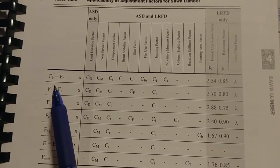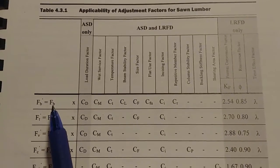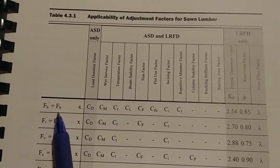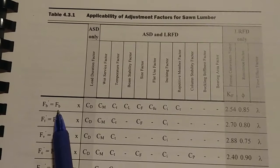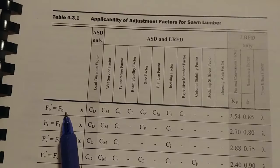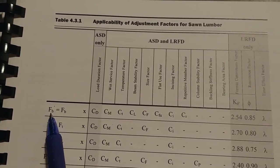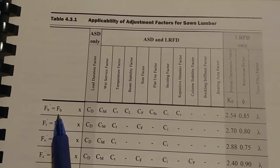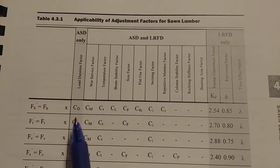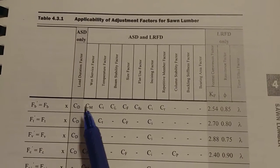So for us, right now we're looking at bending. So that's FB. And what you need to do in order to get your final FB to compare, because remember, this is a stress. So this is the stress of the board. And we need to make sure that that is higher than the stress acting on the board. So FB prime is our final number and FB prime equals FB times all of these factors. As you see here, ASD only. So this is a factor you'd apply when you're using ASD.